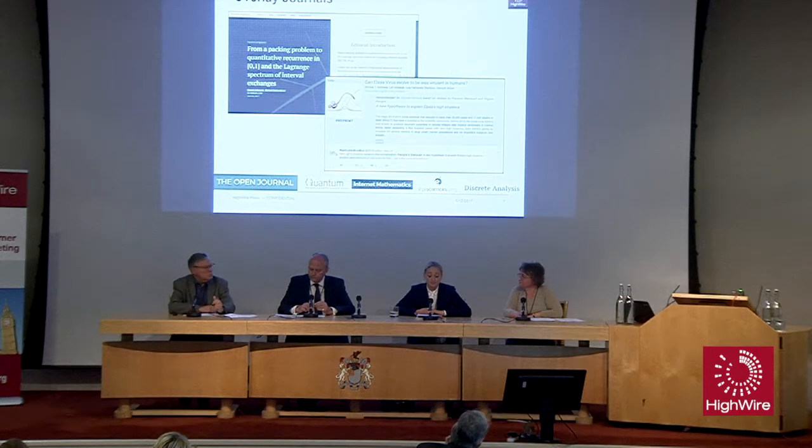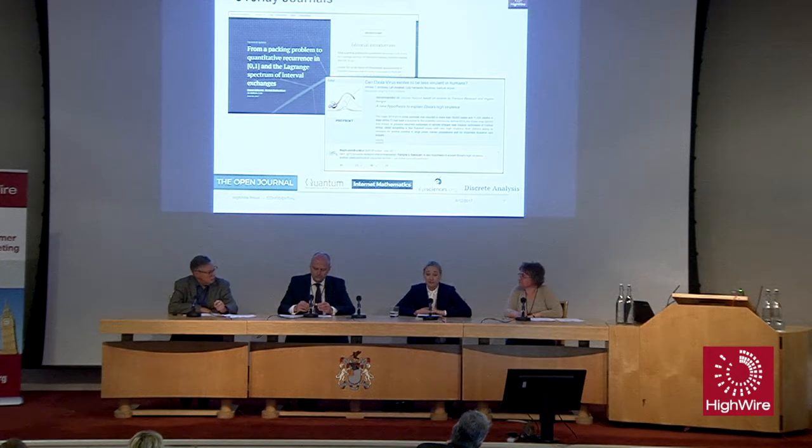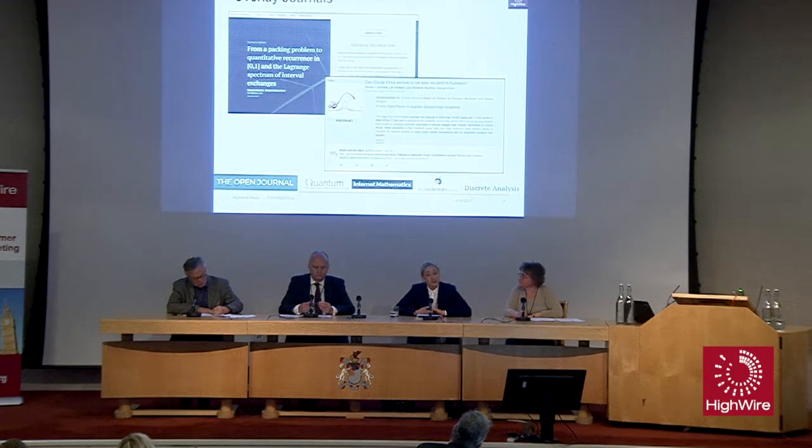How do they work? An author submits or deposits a manuscript to a preprint server, and then approaches an overlay journal in the same way they would approach a normal journal. But instead of uploading a manuscript to a submission system, they just point the link to where the article is deposited on the preprint server. A completely traditional peer review takes place, and the article is either accepted or rejected. If it's accepted, the overlay journal can assign a DOI and give it a cited reference.